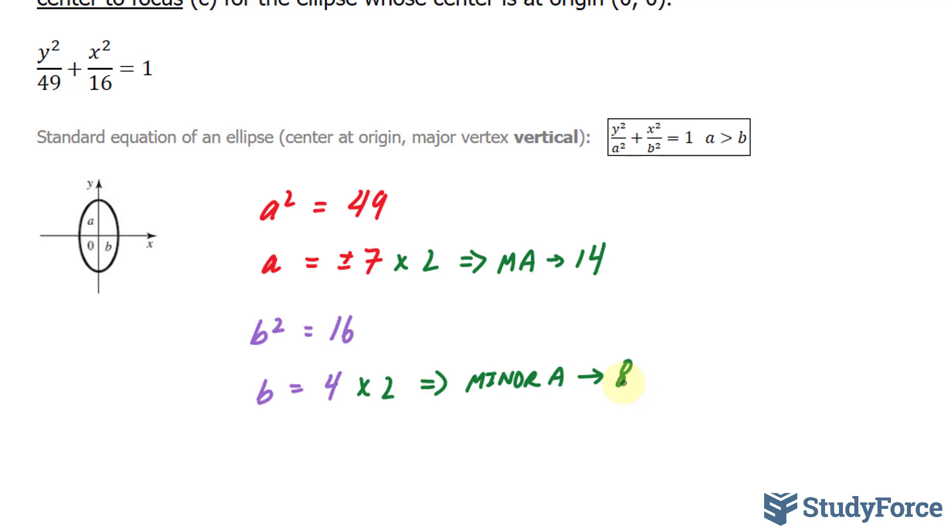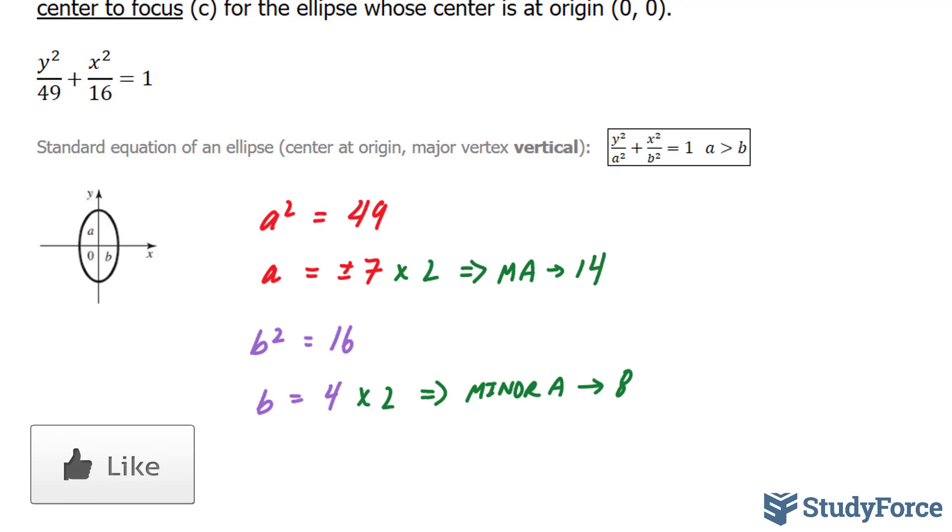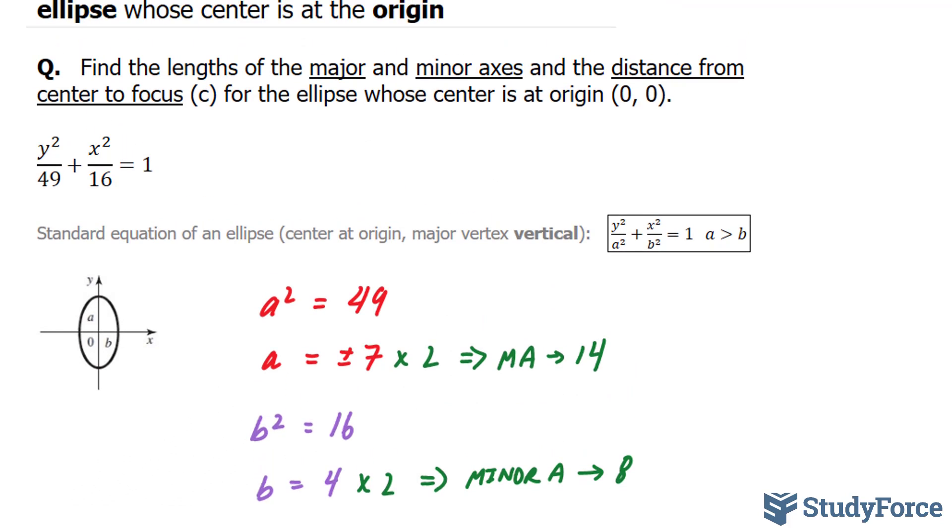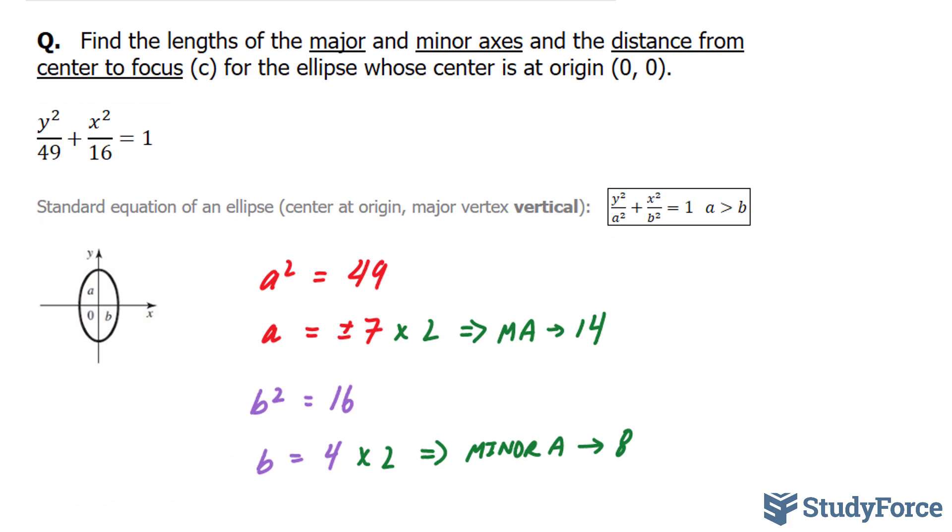So we found our a value, we found our b value, and from our a and our b value, we found our major and minor axis. The last thing that they are asking for in this question is the distance from the center to the focus.